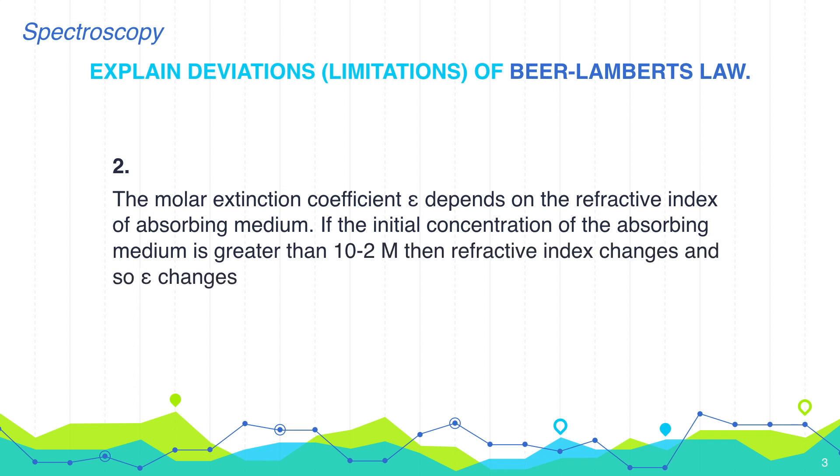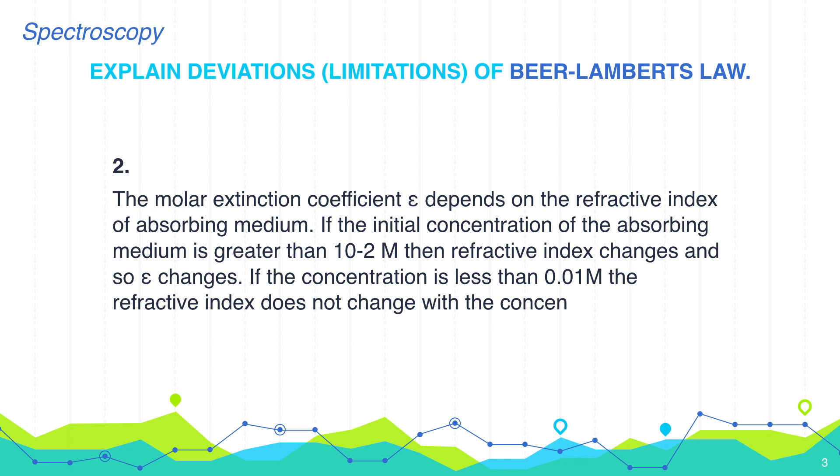If the concentration is less than 0.01 molar, the refractive index does not change with the concentration, and so the epsilon does not change and the law holds true. So the concentration must be less than 0.01 molar.